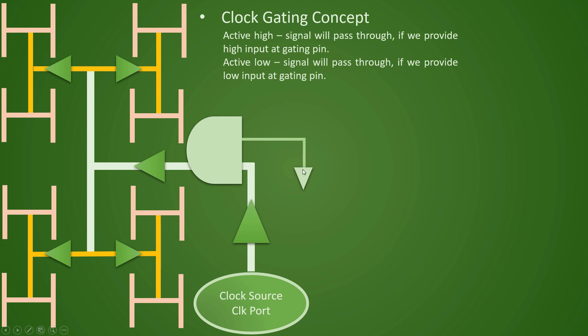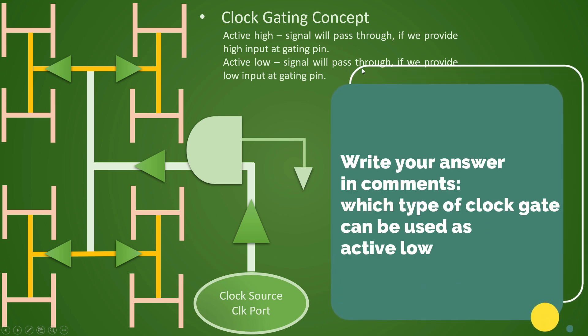Now since we provided low input, it is gating the signal, it will let it pass if we would have provided high input. And active low is when signal will pass through if we provide low input at the gating pin.